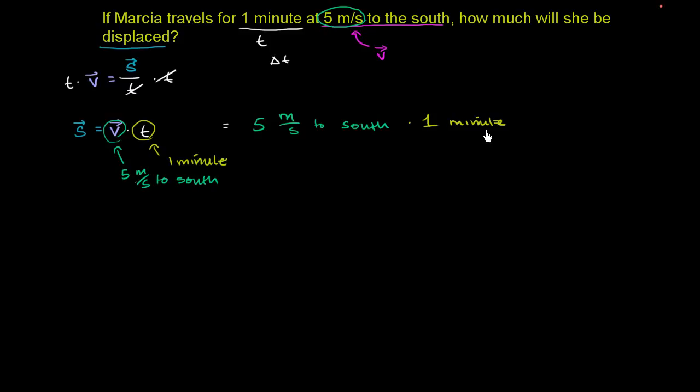So this is the same thing. 1 minute times, and we want to get rid of the minute. The minute is essentially in the numerator right now. We could put this over 1, but it's essentially in the numerator. So we want to divide by minutes and multiply by seconds. We want seconds in the numerator. And so how many seconds are there per minute? You have 60 seconds for every 1 minute. And so you have a minute, canceling out with the minutes. And so now you have 5 meters per second to the south times 60 seconds.